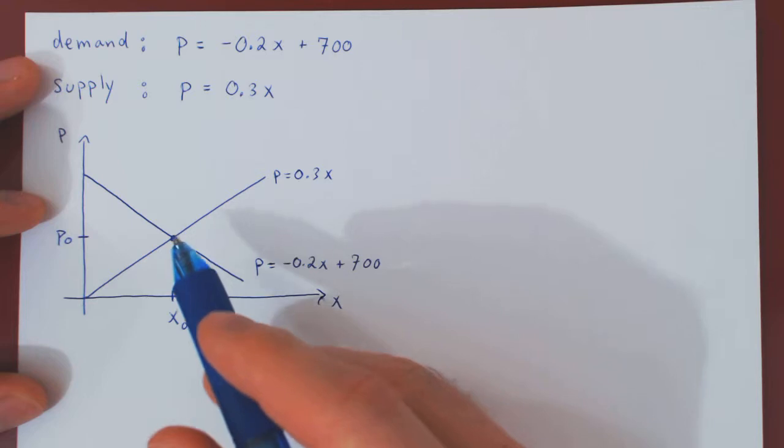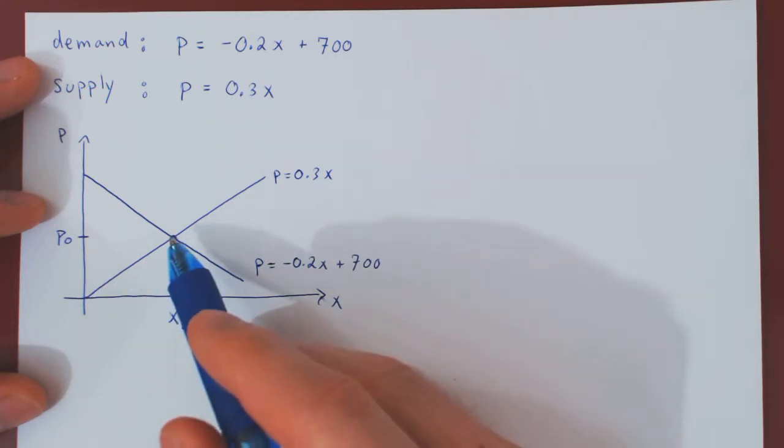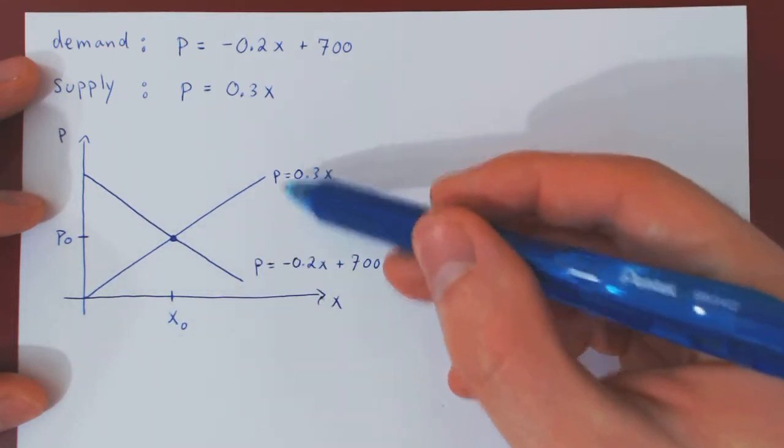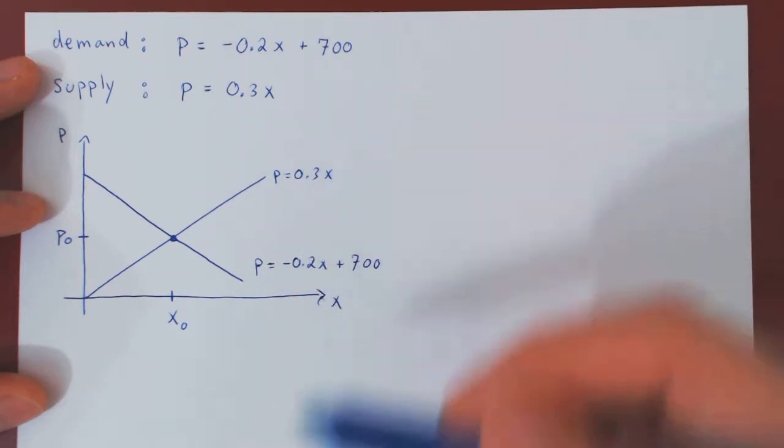To solve for this point of intersection, at this point both functions are equal, so we can equate in both cases the values of p.